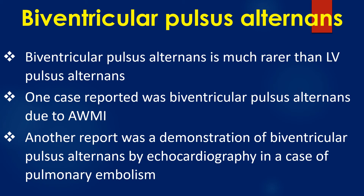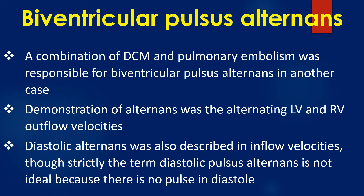One case reported was biventricular pulse alternance due to anterior myocardial infarction. Another report demonstrated biventricular pulse alternance by echocardiography in a case of pulmonary embolism. A combination of dilated cardiomyopathy and pulmonary embolism was responsible for biventricular pulse alternance in another case. Demonstration of alternance was the alternating LV and RV outflow velocities. Diastolic alternance was also described in inflow velocities, though strictly the term diastolic pulse alternance is not ideal because there is no pulse in diastole.